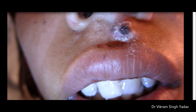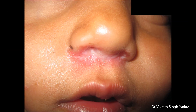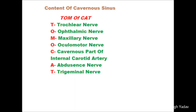And the carotid artery, etc. The contents of the cavernous sinus can be learned with the mnemonic 'TOM of CAT'. As you can see in this video, infections presented over the nose area can cause cavernous sinus thrombosis.